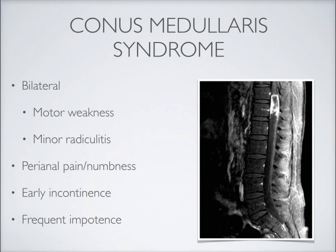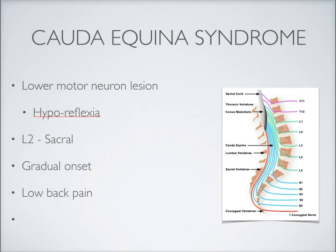We can also see perianal pain or numbness — the area around the anus can be painful or numb. We also see early incontinence fairly early in the progression of conus medullaris syndrome — the inability to maintain normal bowel and bladder functionality, producing incontinence of both. Also in males, impotence is very commonly seen in conus medullaris syndrome.